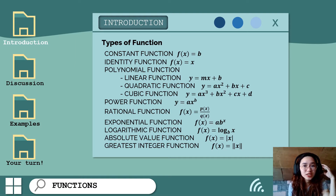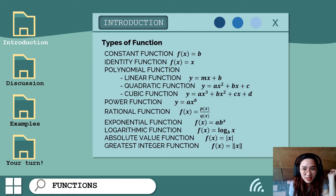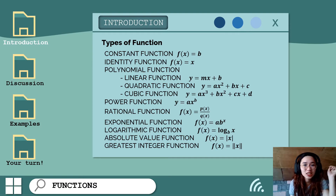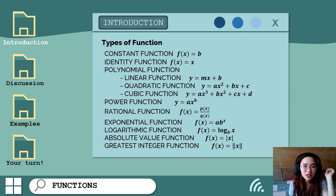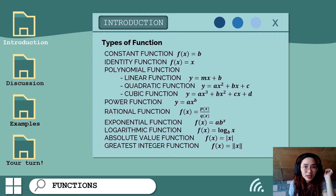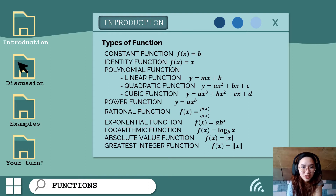The identity function is a function which returns the same value that was used as its argument — the output always equals the input. Polynomial function has three types: the linear function wherein the degree is 1, the quadratic function wherein the degree is 2, and the cubic function where the degree is 3.